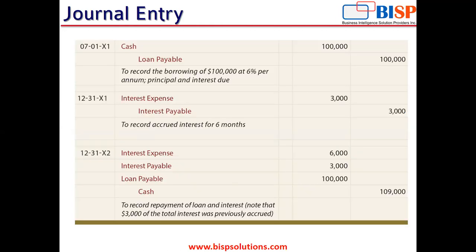This is an example of journal entries typically passed in business operations — a loan to be paid, interest expenses, loan payable, and so on. The main thing to focus on is that the debit amount and the credit amount of the transactions are equal. Though there are many lines included, the debit side and credit side must always be equal. That is the significance of the double entry system.